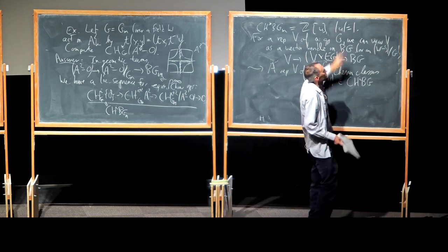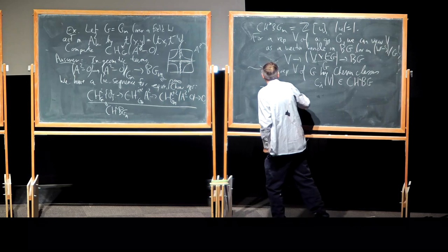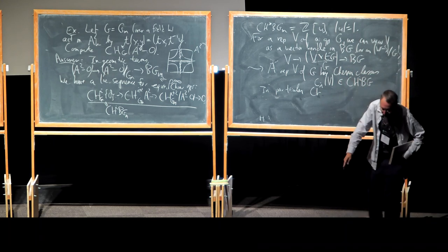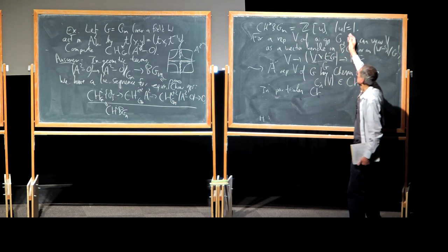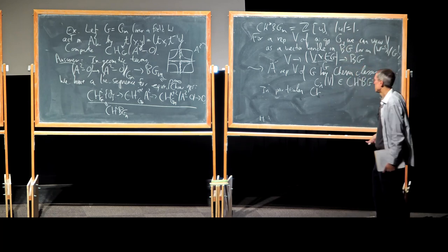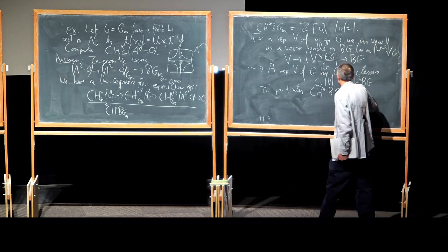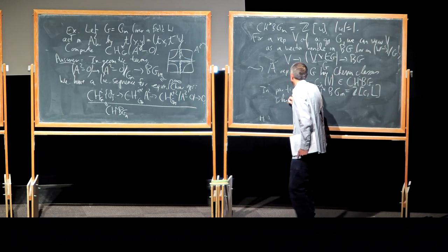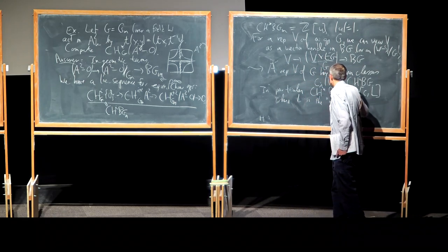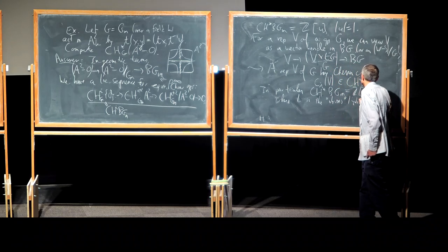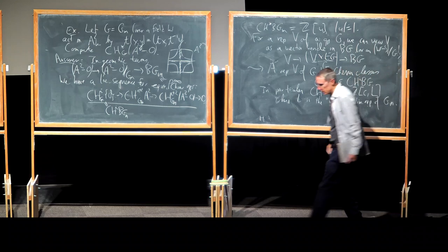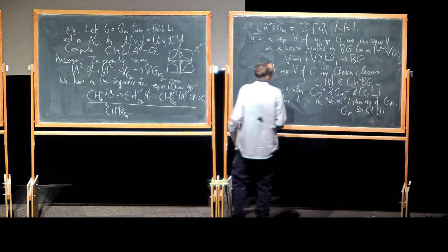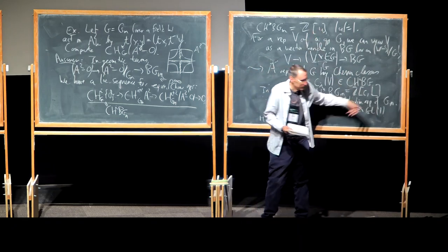This class — the generator of the Chow ring of BG_m — is such a Chern class. The Chow ring of BG_m is generated by the first Chern class of O(1), and O(1) is the line bundle associated to the standard one-dimensional representation of G_m. So you could say the Chow ring of BG_m is the polynomial ring on the first Chern class c_1(L), where L is the obvious one-dimensional representation of G_m. G_m is isomorphic to GL_1.